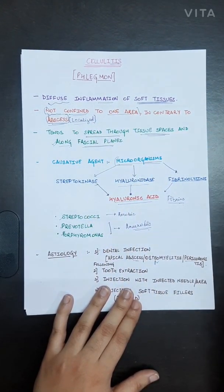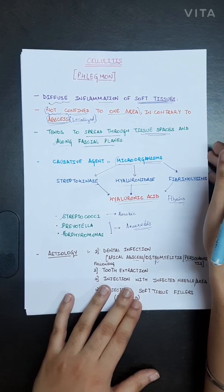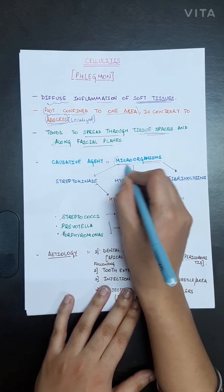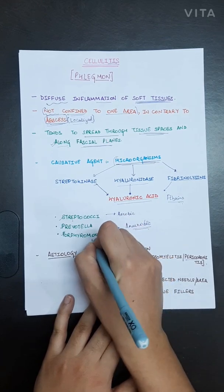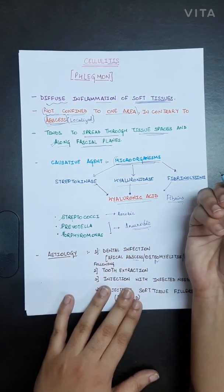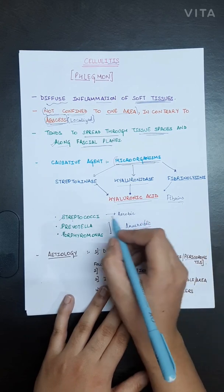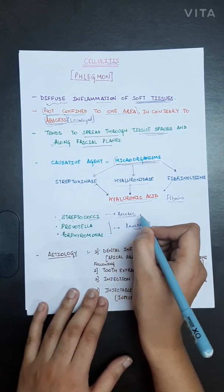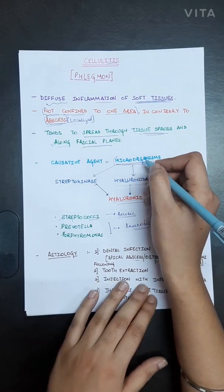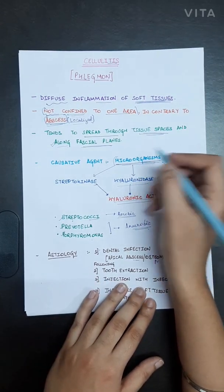The causative agent behind cellulitis is microorganisms such as streptococci, prevotella, and porphyromonas. The microorganisms can be aerobic or anaerobic. Streptococci is basically aerobic bacteria.